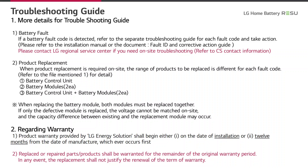Regarding warranty: the product warranty provided by LG Energy Solution shall begin either on the date of installation or 12 months from the date of manufacture, whichever occurs first. Replaced or repaired parts and products shall be warranted for the remainder of the original warranty period. In any event, the replacement should not justify the renewal of the term of warranty.